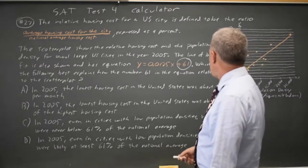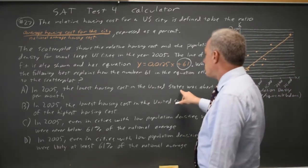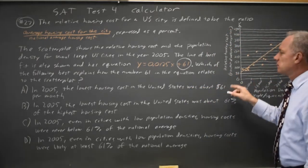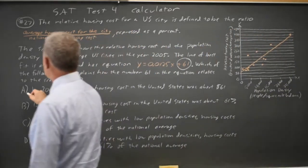Choice A interprets that 61 as dollars per month. But these are not dollars. This is a percent. So choice A is not correct.